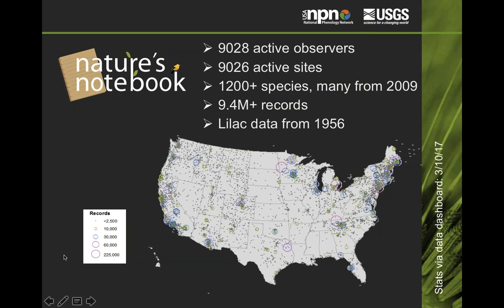As of right now, today we have 9,000 active observers who are observing at 9,000 sites — meaning they've submitted one or more observations in their locations. We just uploaded a brand-new suite of species for the 2017 season, so we're up to about 1,200 species total, plants and animals — a third animals and two-thirds plants. Our database is up to 9.4 million observation records. We have lilac data in our dataset dating back to 1956, and that dataset was used to develop some of the models like the spring maps.